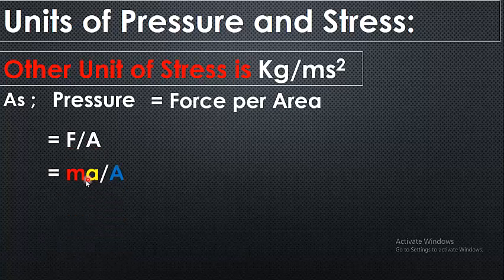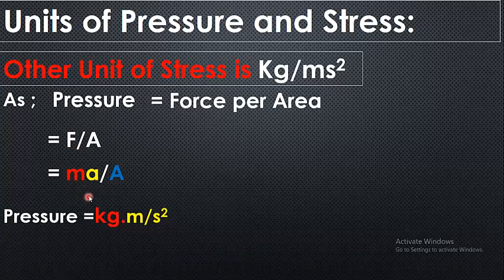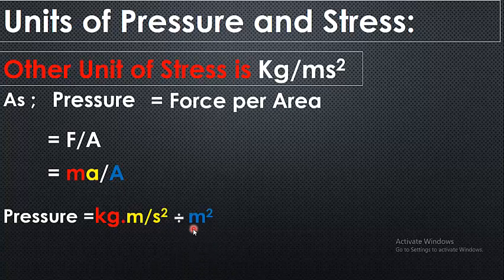Now F is the force which is equal to MA — mass times acceleration — and A is for area. So we put the value of force, that is MA. Now we know that the unit of mass is kg, the unit of acceleration is meter per second square, and this is divided by area which is in square meters.